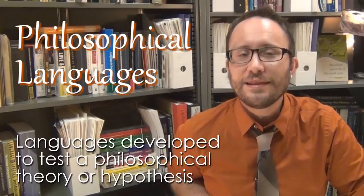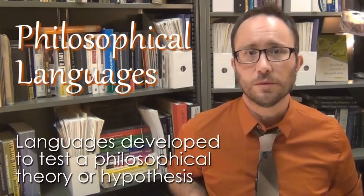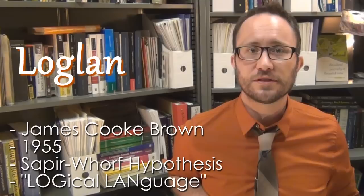The next category we can talk about are philosophical languages. These are languages that are developed and created with the specific goal of testing some kind of philosophical problem. So one of the most famous philosophical languages is called Loglan, and it was invented in order to test the Sapir-Whorf hypothesis. The idea that the language that we speak affects how we think about the world. You can also think of computer languages as kinds of philosophical languages. So things like Basic or Python. They're invented as a way of categorizing the world, and therefore we can think of them as offshoots, at the very least, of philosophical languages.